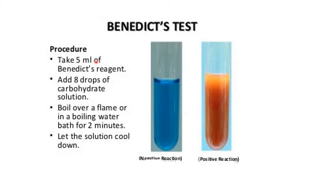The Benedict's test procedure is very simple. Add 5 ml of Benedict's reagent to a test tube. Then add a few drops of carbohydrate solution — this could be a fructose solution or a glucose solution depending on what you are testing. Heat the mixture and then observe the color change.